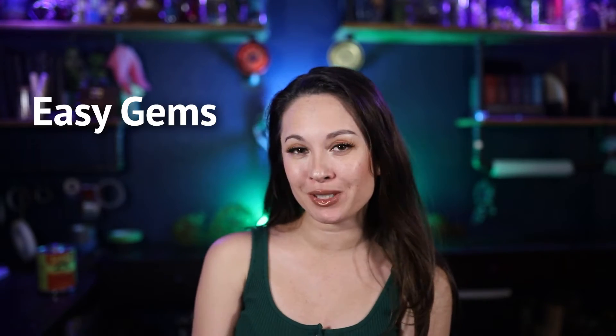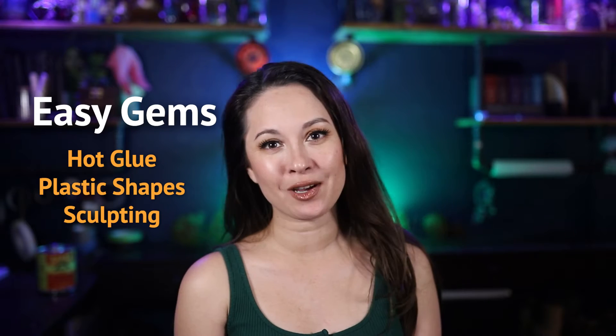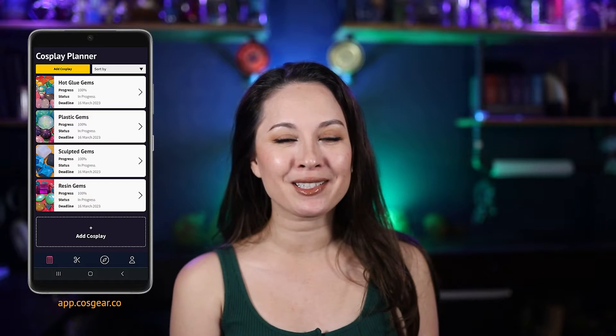Hi, I'm Hentai with Kosgear and today we're making 17 different gems using four main techniques: hot glue, plastic shapes, sculpting, and resin casting. In addition to that we're going to use different materials to color, set, and back our gems. All techniques and materials will be timestamped below and I'm going to use the Kosgear App Planner to make it easy to follow along. So let's get started.